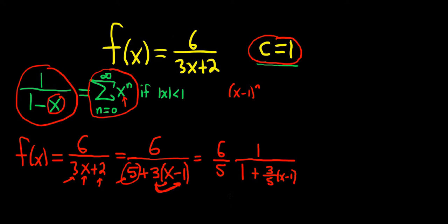And we're still not there. We're not there because we need a minus sign. So what we do now is we use the fact that minus and minus is plus. So this is 6 fifths times 1 over 1 minus, minus, and then I'm going to use a bracket here for added clarity, negative 3 fifths. So you see the minus and the minus give you a plus. This is x minus 1.